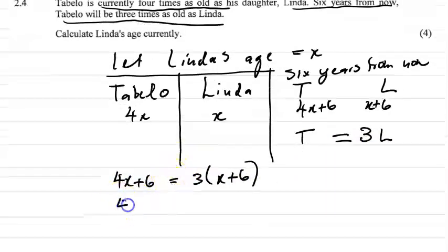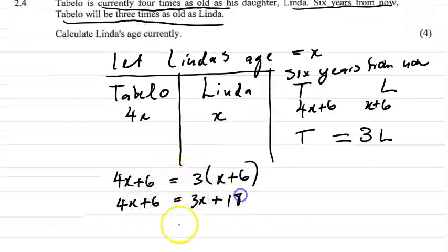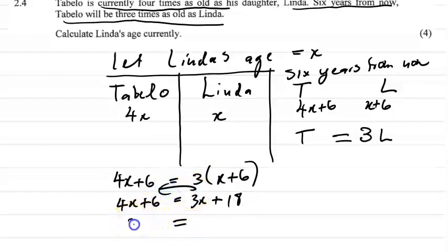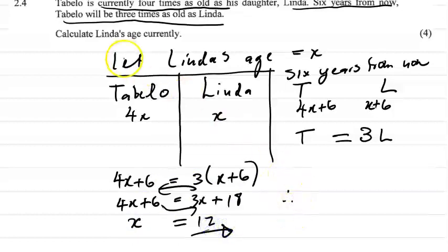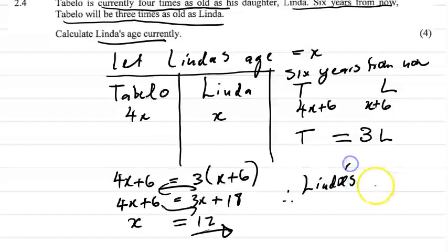Let's solve this equation. 4x plus 6 equals 3x plus 18. Taking 3x to the left-hand side: 4x minus 3x equals x. So x equals 18 minus 6, which is 12. Therefore, Linda's current age is 12 years.